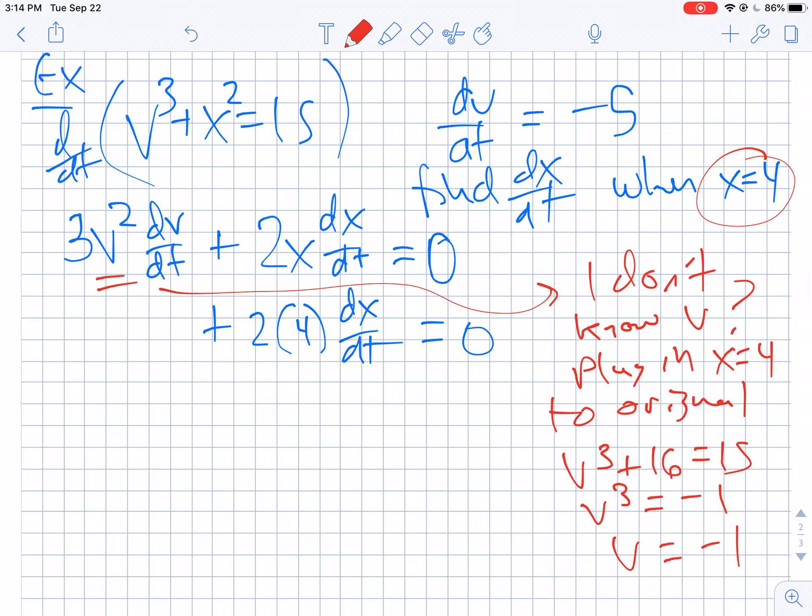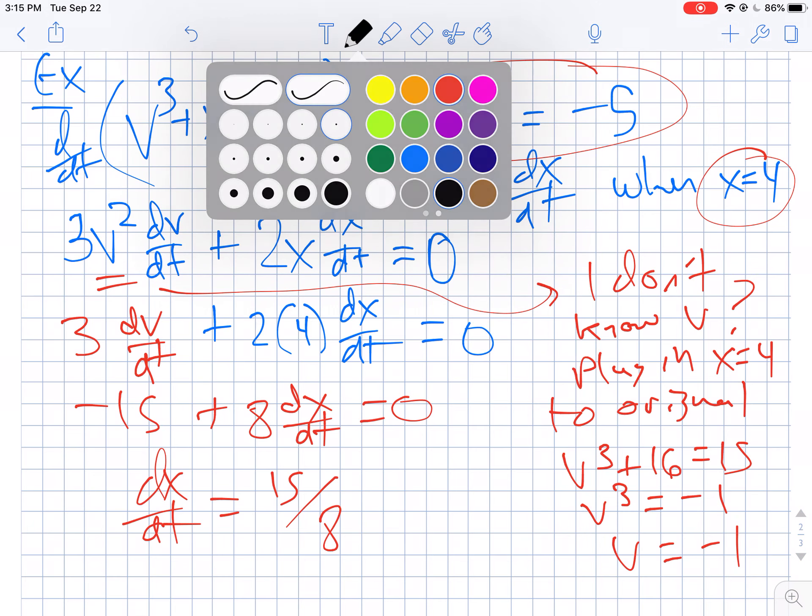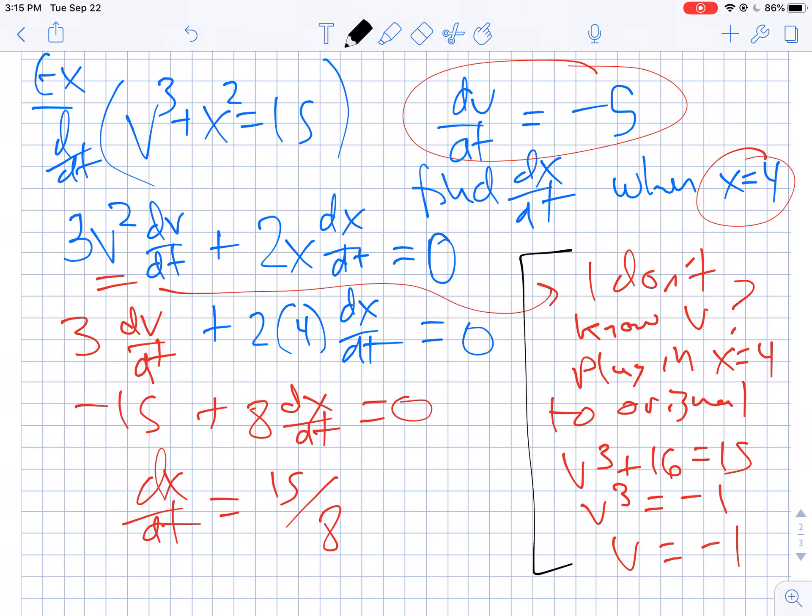Now when we do that, we have 3(1)(dv/dt), which we know is -5, so that's like -15 + 8(dx/dt) = 0. So that means my dx/dt is equal to 15/8. The tricky part here, the new thing that we had to do was figure out a missing piece of information by looking at the original equation, going back to see our relationship between those two variables.